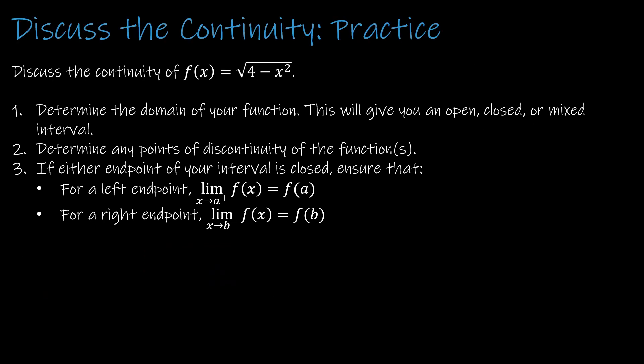We have the function f of x equals the square root of 4 minus x squared. I threw this one in because it's a radical function, and I'd like to review different types of functions. For a radical function, the domain requires the radicand — the part inside — to be greater than or equal to zero, because if I take the square root of a negative value I end up with an imaginary number. So to determine the domain, I take 4 minus x squared and set that greater than or equal to zero.